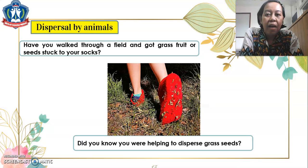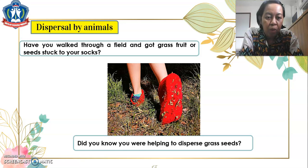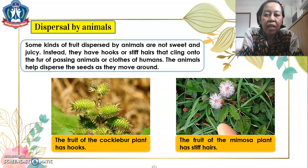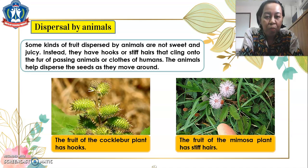Now, back to dispersal by animals — have you walked through a field and got fruit or seeds stuck to your socks? Did you know you were helping disperse grass seeds? Some kinds of fruit dispersed by animals are not sweet and juicy. Instead, they have hooks or stiff hairs that cling onto the fur of passing animals or the clothes of humans, and the animals help disperse the seeds as they move around. For example, the fruit of the cocklebur plant has hooks, while the fruit of the mimosa plant has stiff hairs.